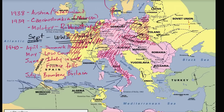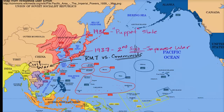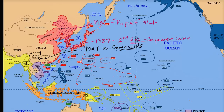Things get only worse from there. In September, the Axis forms with Japan joining — Japan signs the Tripartite Pact — and it becomes the Axis between Japan, Italy, and Germany. So now Japan is in the mix. And since France has already fallen to Germany, Japan says maybe they can go after some of France's colonies, and in particular French Indochina, which we now refer to as Vietnam and Cambodia. So shortly thereafter, Japan attacks French Indochina.